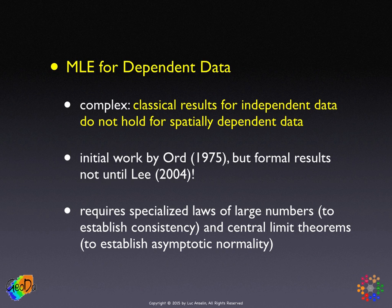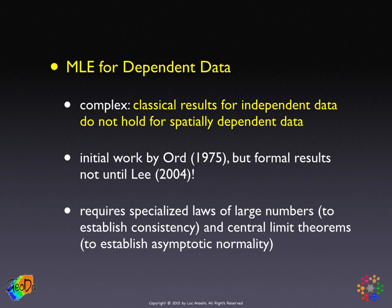Why did it take so long? Because it is very difficult. It requires specialized laws of large numbers to establish consistency for variables that are neither independent nor identically distributed, and appropriate central limit theorems to establish asymptotic normality. The bottom line is everything works — we get consistency, asymptotic normality, and asymptotically smallest variance — but formally proving it is quite complex and difficult.